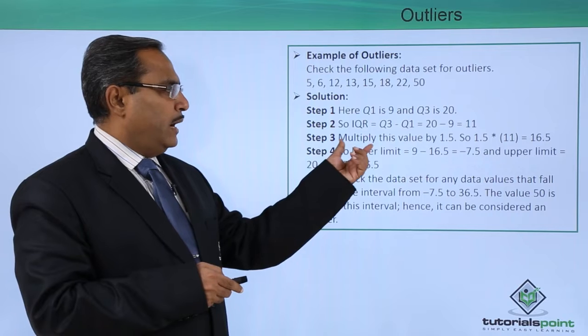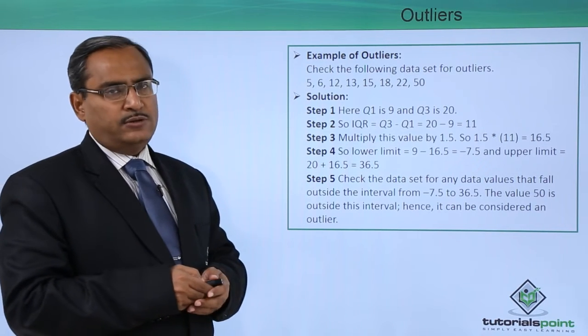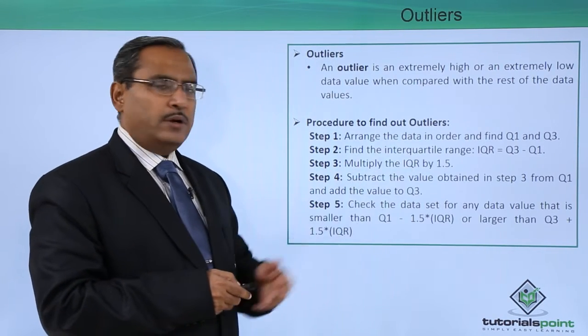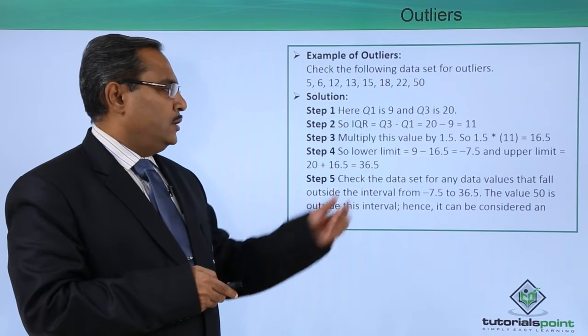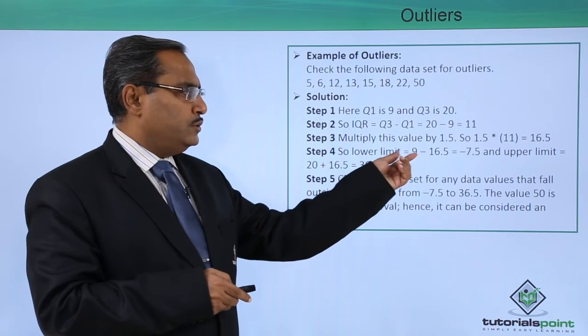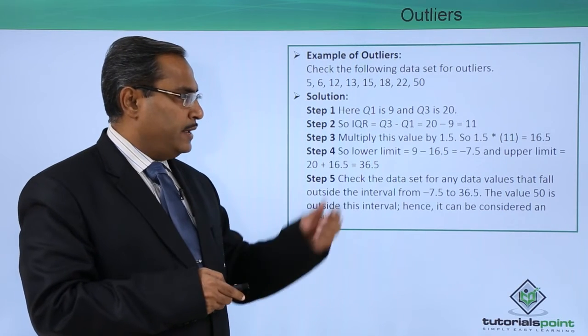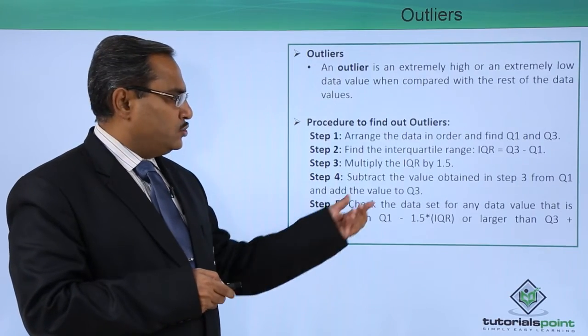Now I shall multiply this value with 1.5. 1.5 times 11 equals 16.5. Step number 3, multiply this IQR by 1.5, has been done. Next, the lower limit equals 9 minus 16.5, which is minus 7.5, and the upper limit equals 20 plus 16.5, which is 36.5.